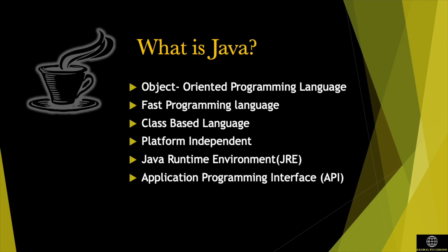Java platform includes a compiler, an execution engine, and a set of libraries. API libraries help developers to reuse the available code in the library.